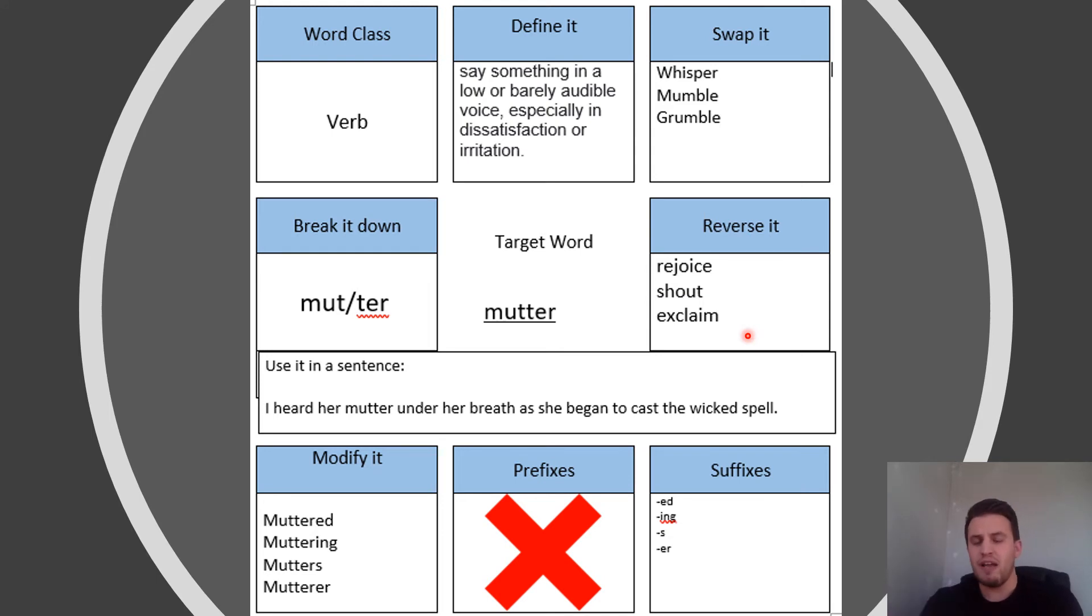For the opposites, we could use rejoice, shout, or exclaim. Mutter is quiet, but rejoice and shouting means when you're happy with something and you want to really put it out there to the world. We've got two syllables: mutter, mut and ter. It's quite simple there. When I tried to use it in the sentence, I linked it back to The Worst Witch. I heard her mutter under her breath as she began to cast the wicked spell. I put an extra adjective in there to try and enhance my sentence a little bit too.